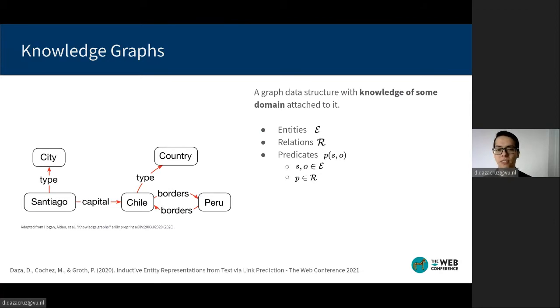Knowledge graphs are useful to represent information about the world and they are used commonly in search engines, social networks, and in the scientific domain. The figure to the right shows a small example that contains information about a couple of countries and a city.